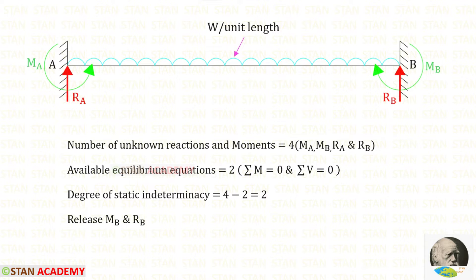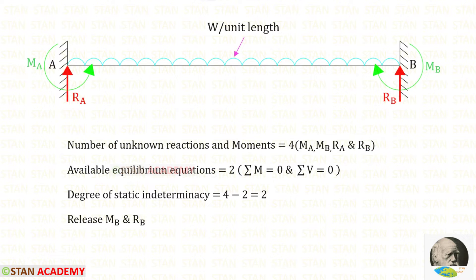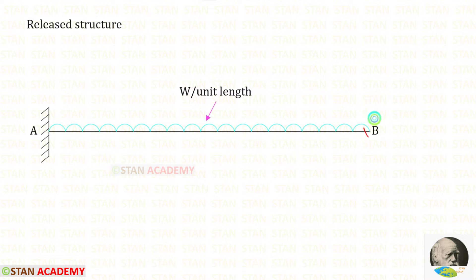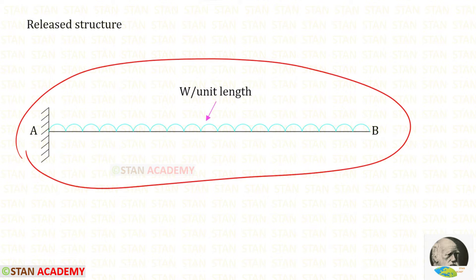Now let us find the degree of static indeterminacy. In this beam the number of unknown reactions and moments are 4: the moments MA and MB and the reactions RA and RB. The available equilibrium equations are 2, so the degree of static indeterminacy is 4 minus 2, which equals 2. From these 4 unknowns, let us remove MB and RB, so point B becomes a free end and the beam becomes a cantilever.